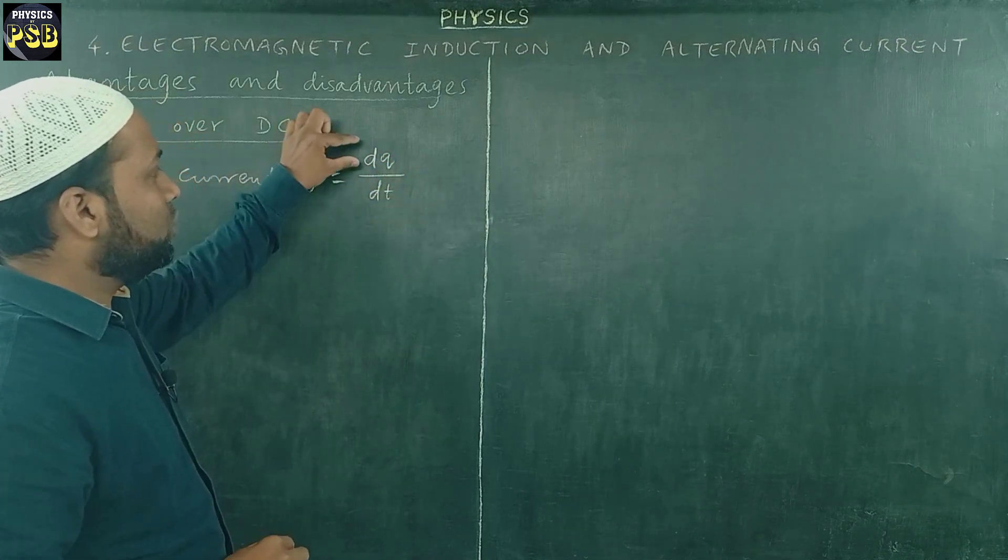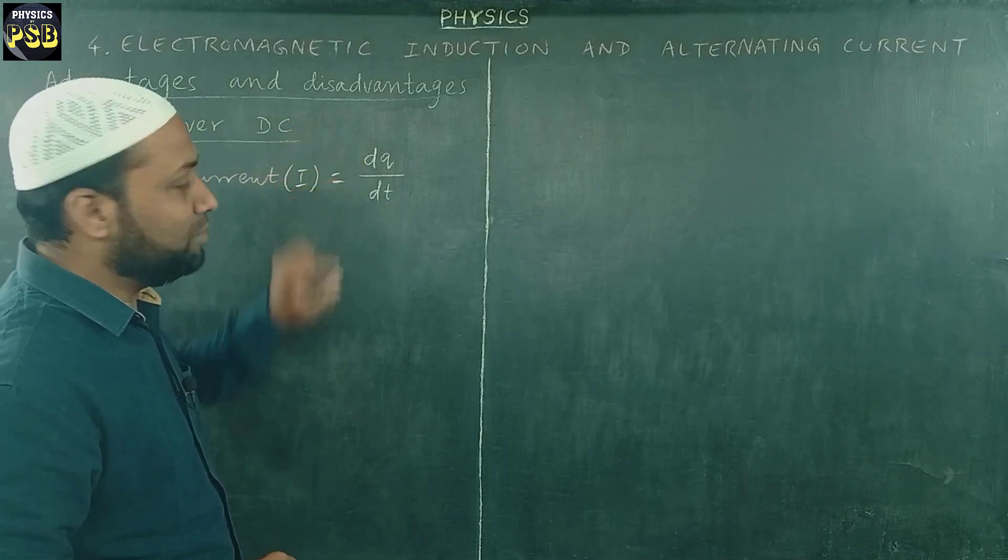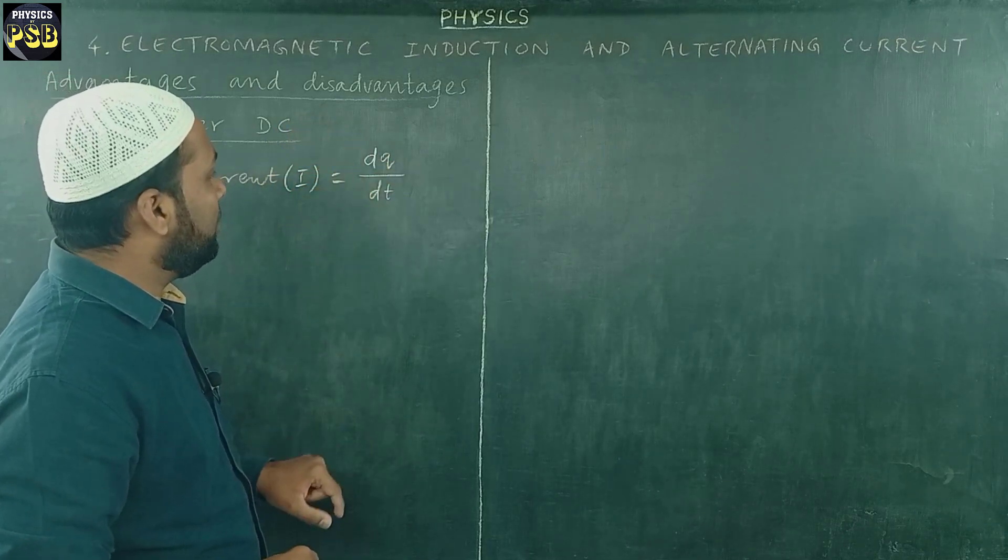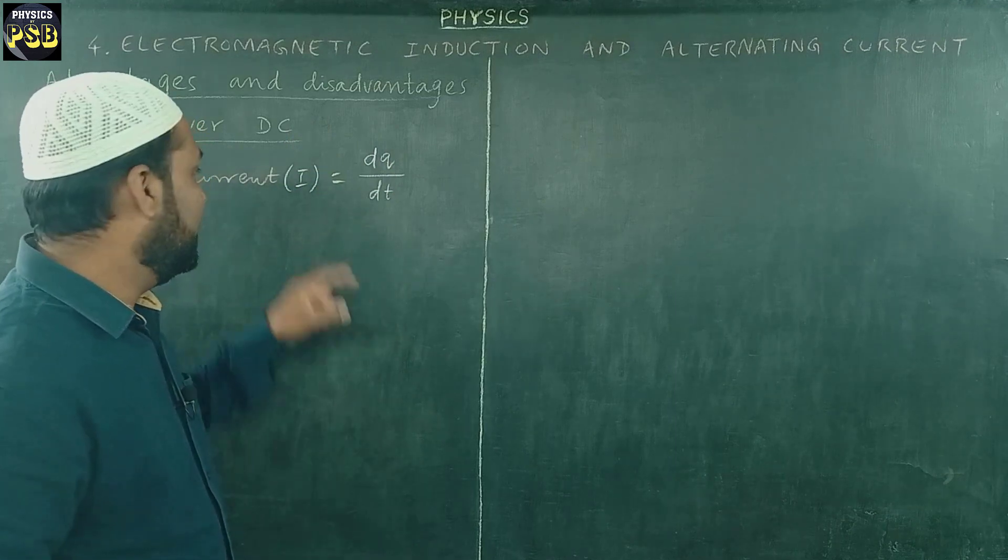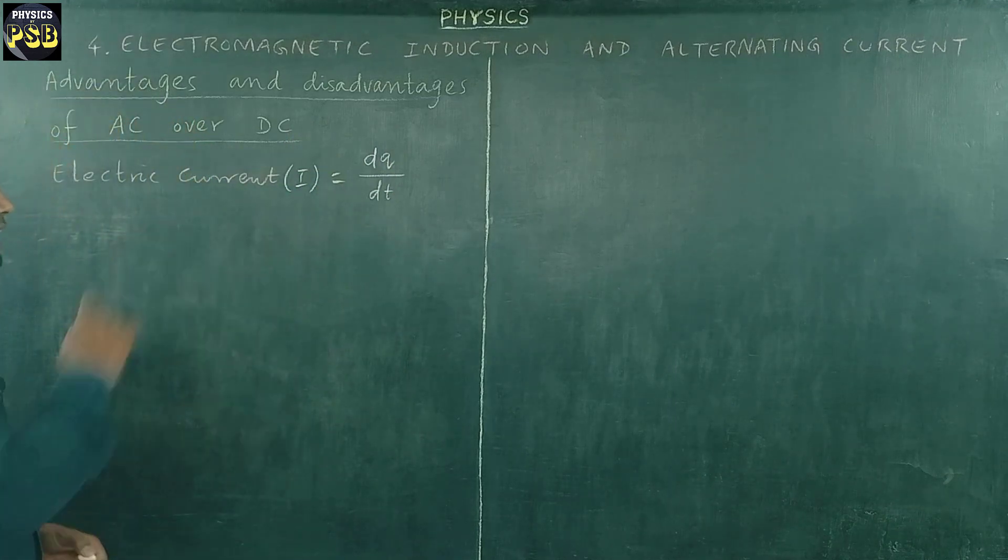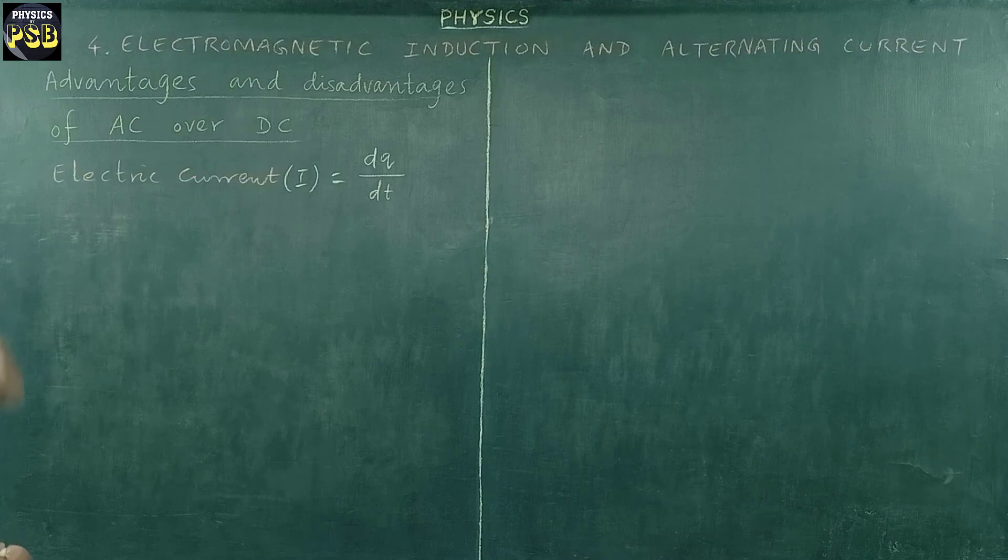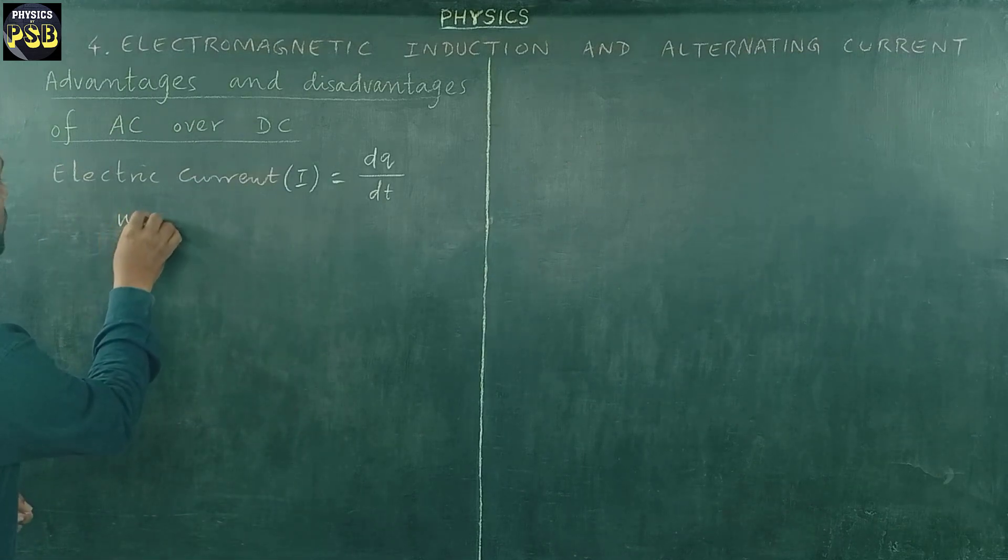Number of charges flowing through the conductor is DQ in a given time DT. So DQ upon DT is taken as electric current, represented by letter I. And it is measured in ampere. The unit of measurement of electric current is ampere, represented by capital A.